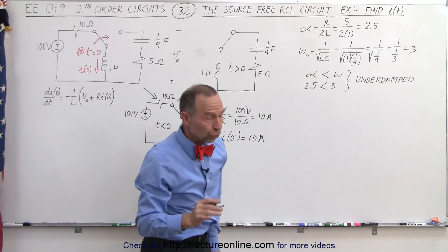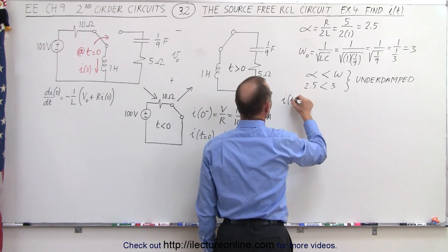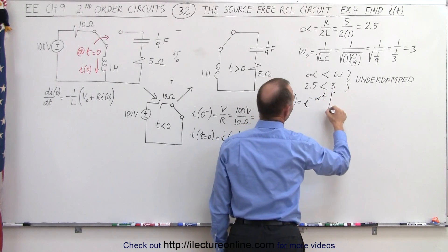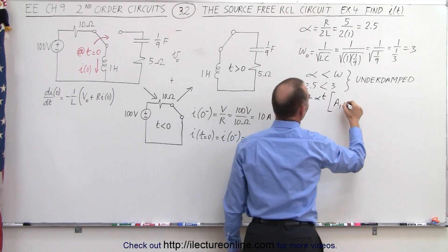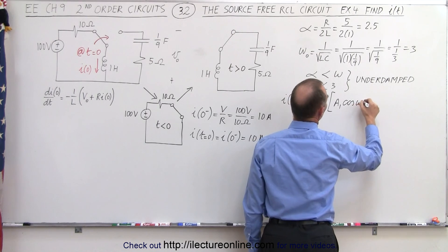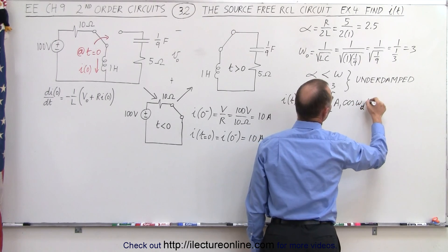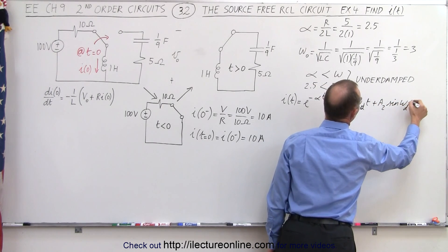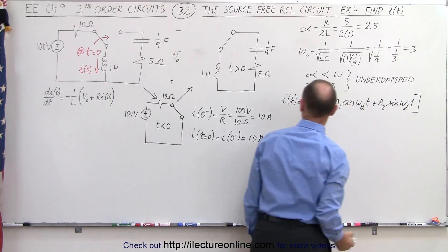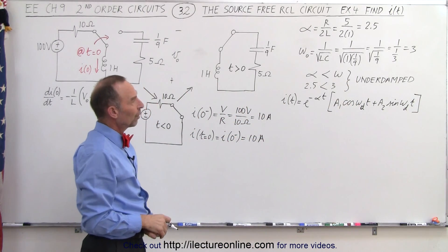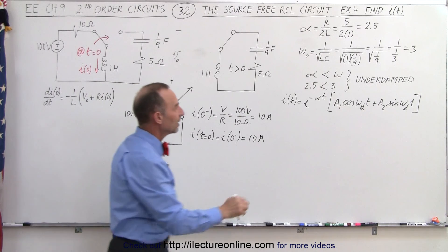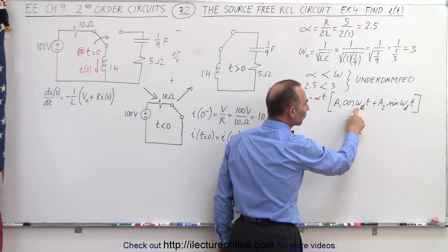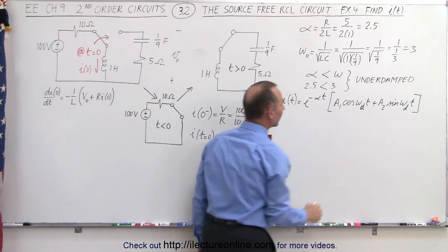Since the system is underdamped, the general solution for the current I as a function of time is equal to e to the minus alpha t, times a1 times the cosine of omega sub d times t, plus a2 times the sine of omega sub d times t. We already have alpha, but we still need to find the natural damped frequency and the values for a1 and a2.